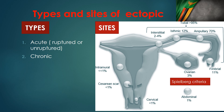Ectopic pregnancies can be classified as acute or chronic. An acute ectopic is where a woman presents in shock with severe abdominal pain and vaginal bleeding. A chronic ectopic is one where the bleeding has been naturally arrested — omentum has grown into the ectopic, clots have formed, bowel has adhered to the bleeding site, and when we operate, there is no active bleeding, just an old ectopic.